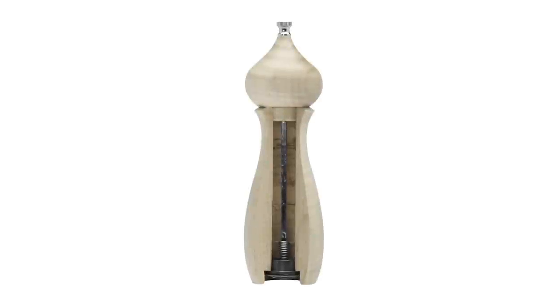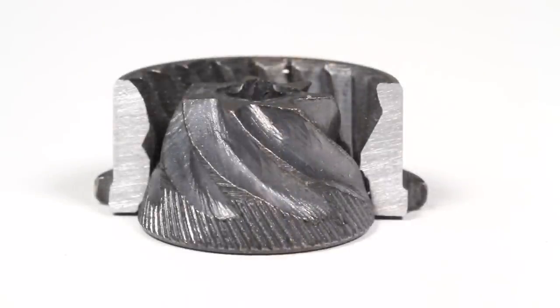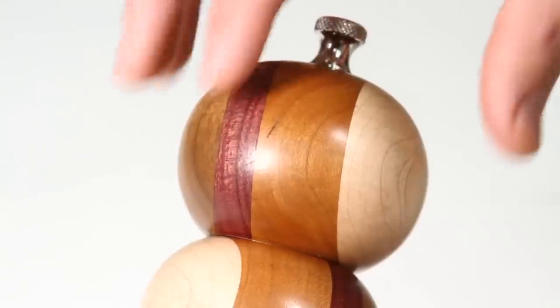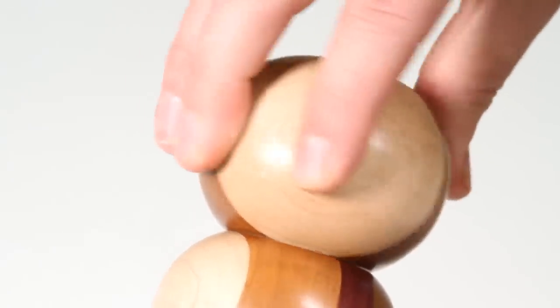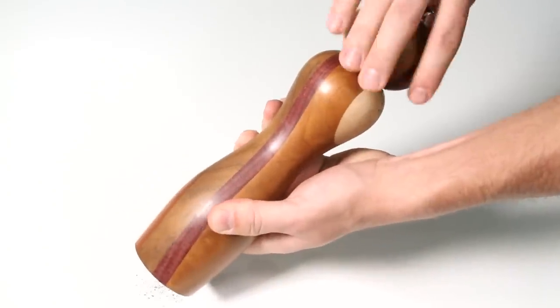Artisan mills are guaranteed to last a lifetime and feature two-stage, adjustable mechanisms that provide even, consistent grinding while requiring only a slight twist to provide a significant amount of fresh, aromatic peppercorn or salt.